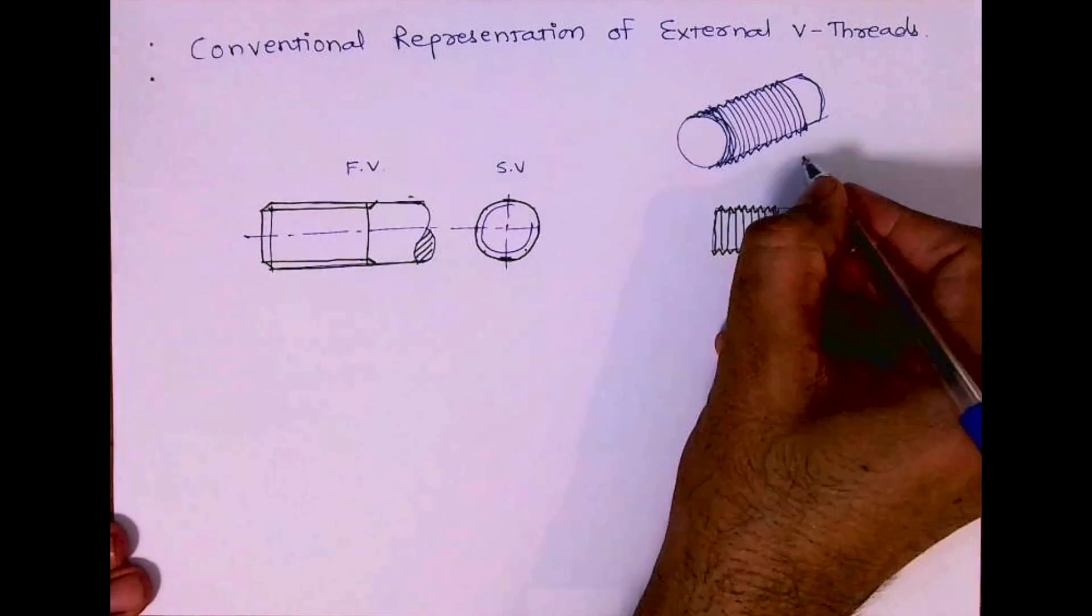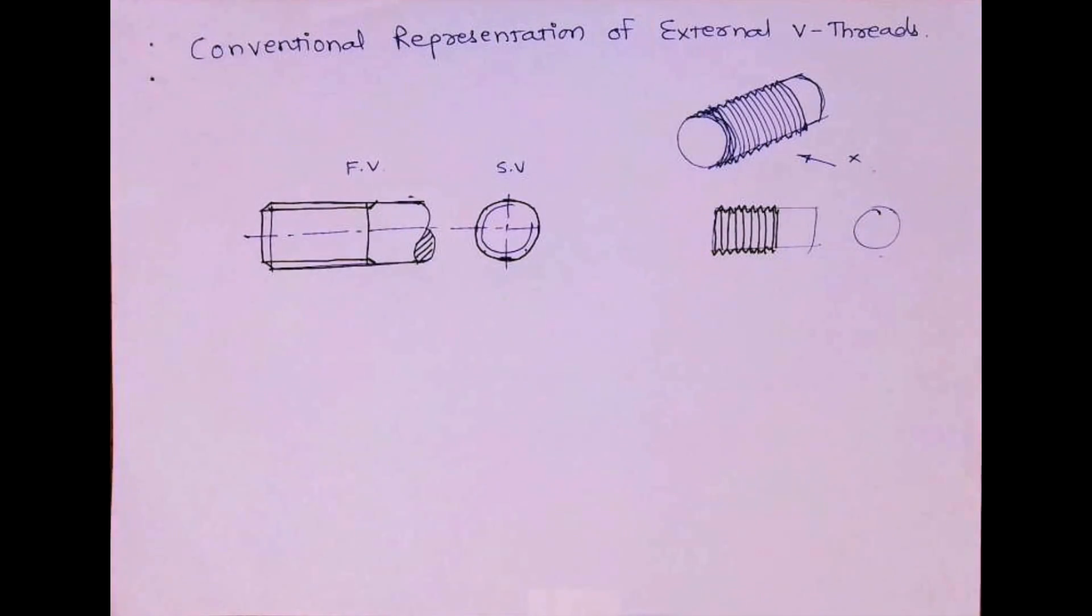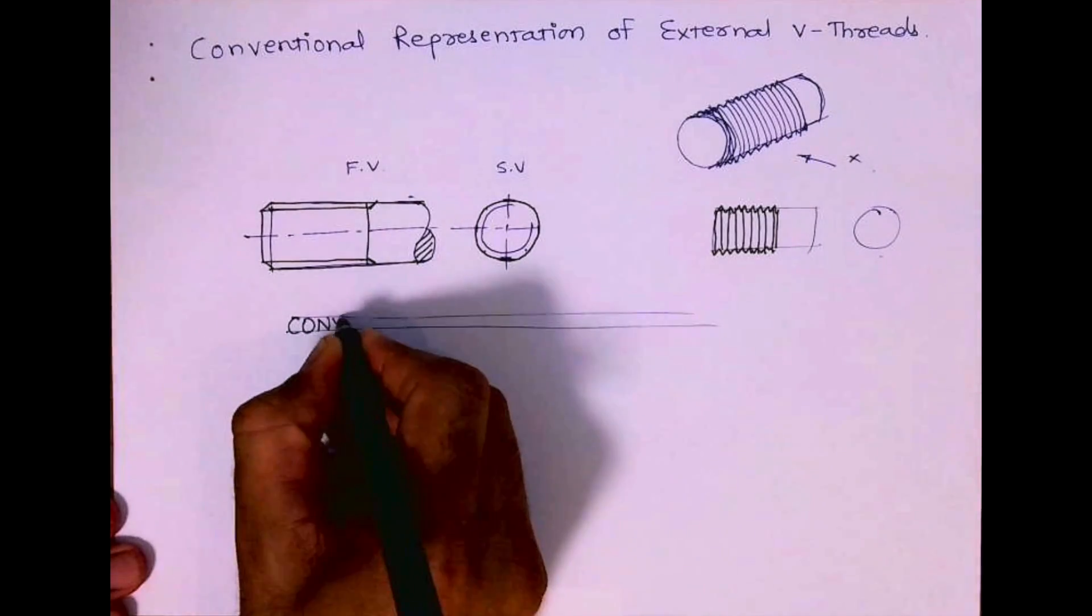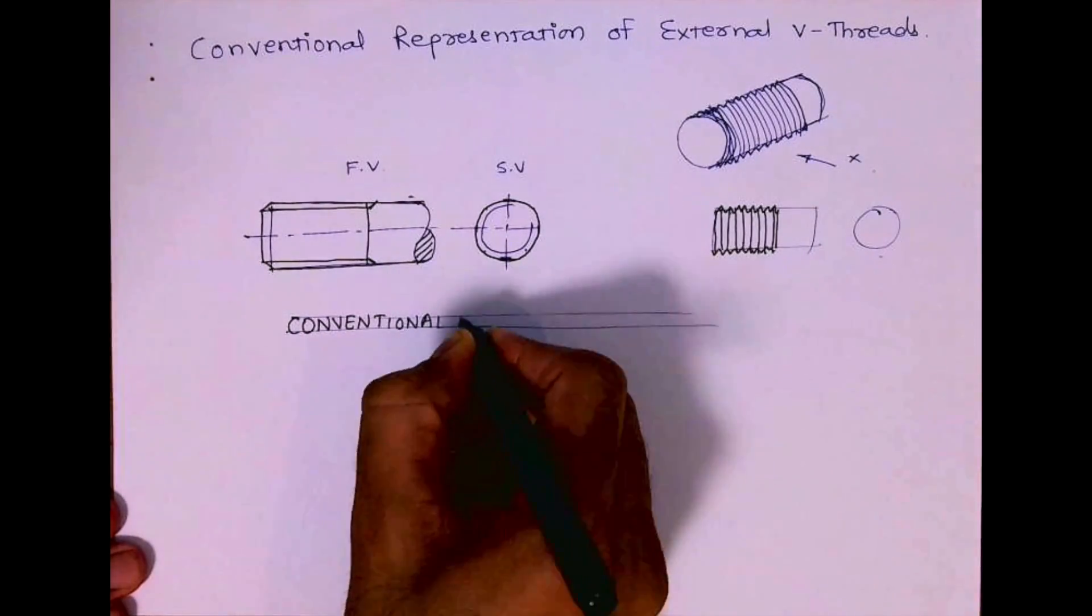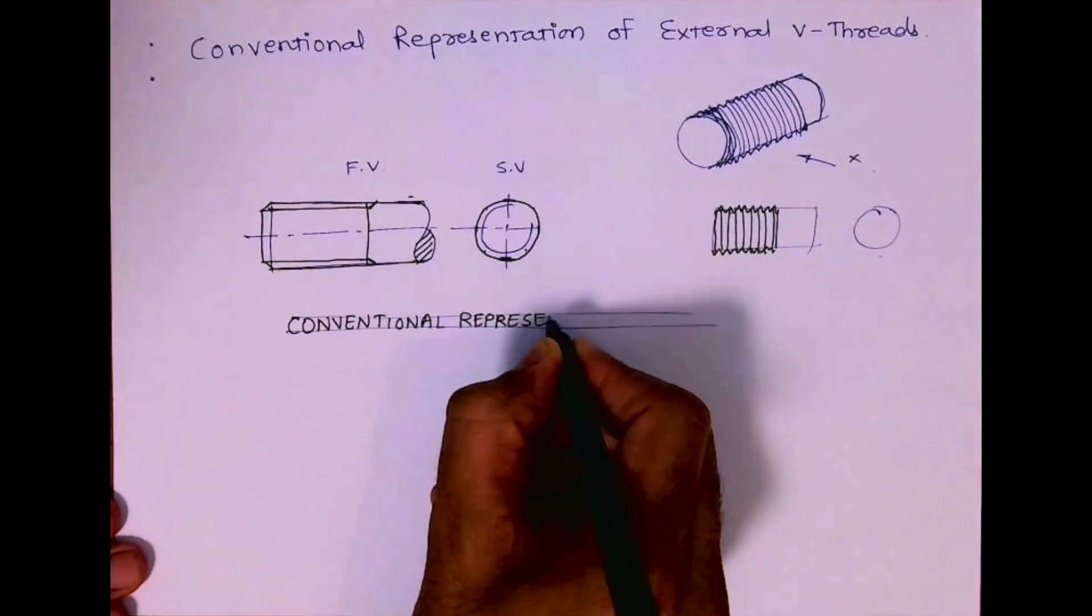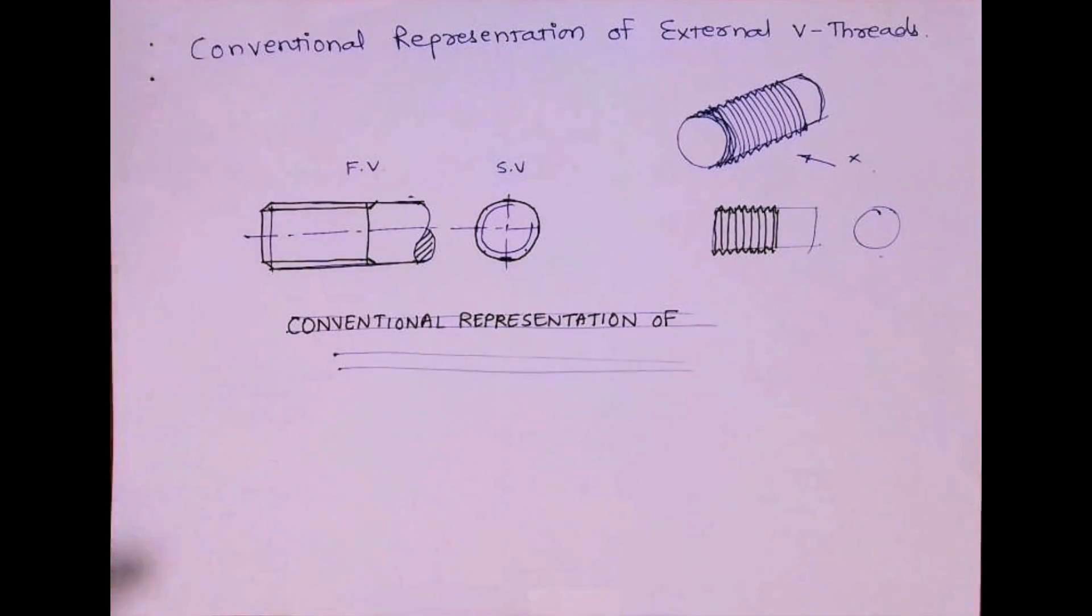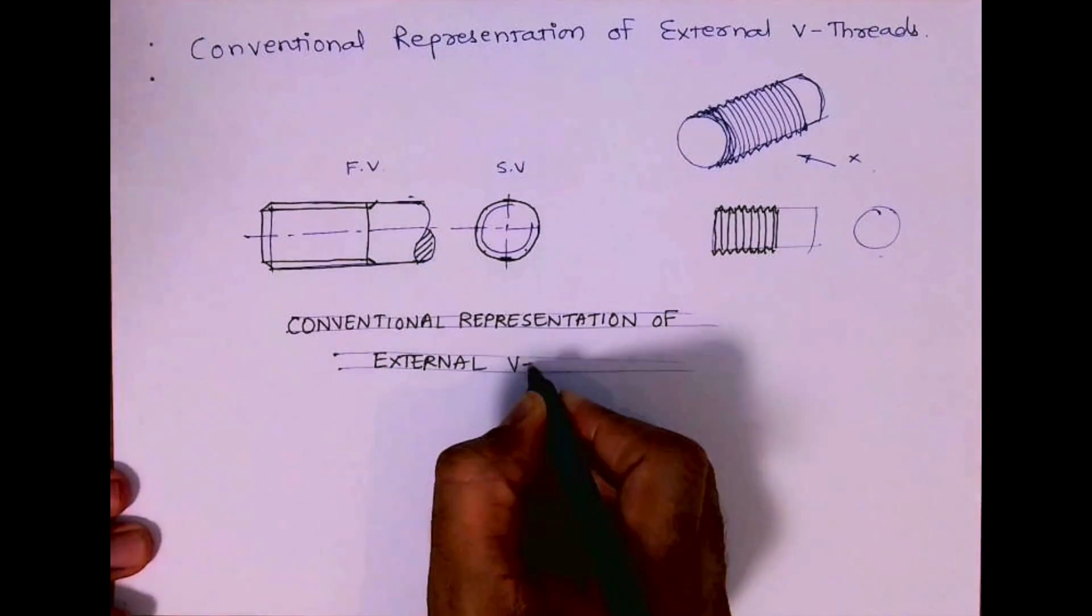This is how people have agreed that we will draw it like this. This is the conventional representation of external V-thread. Since we are following first angle projection, that's why the three-fourth circle is in the first quadrant.